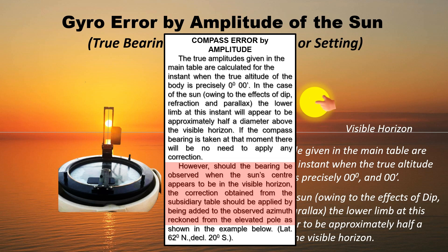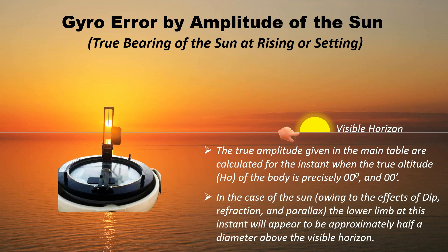However, should the bearing be observed when the sun's center appears to be in the visible horizon, the correction obtained from the subsidiary table should be applied by being added to the observed azimuth, reckoned from the elevated pole, but this scenario will be discussed in a separate video.